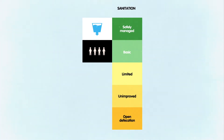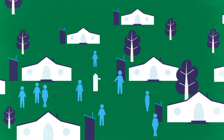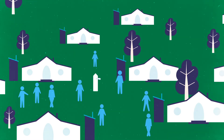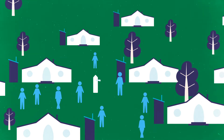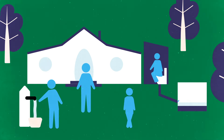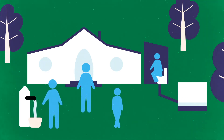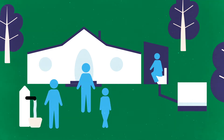For sanitation services, open defecation followed by unimproved and limited services form the bottom rungs of the ladder. Above them are basic services — improved and shared facilities that safely separate excreta from humans. As with water, safely managed services are the top of the ladder. They are considered such when facilities are not shared and when they properly separate, dispose of, and treat fecal waste.